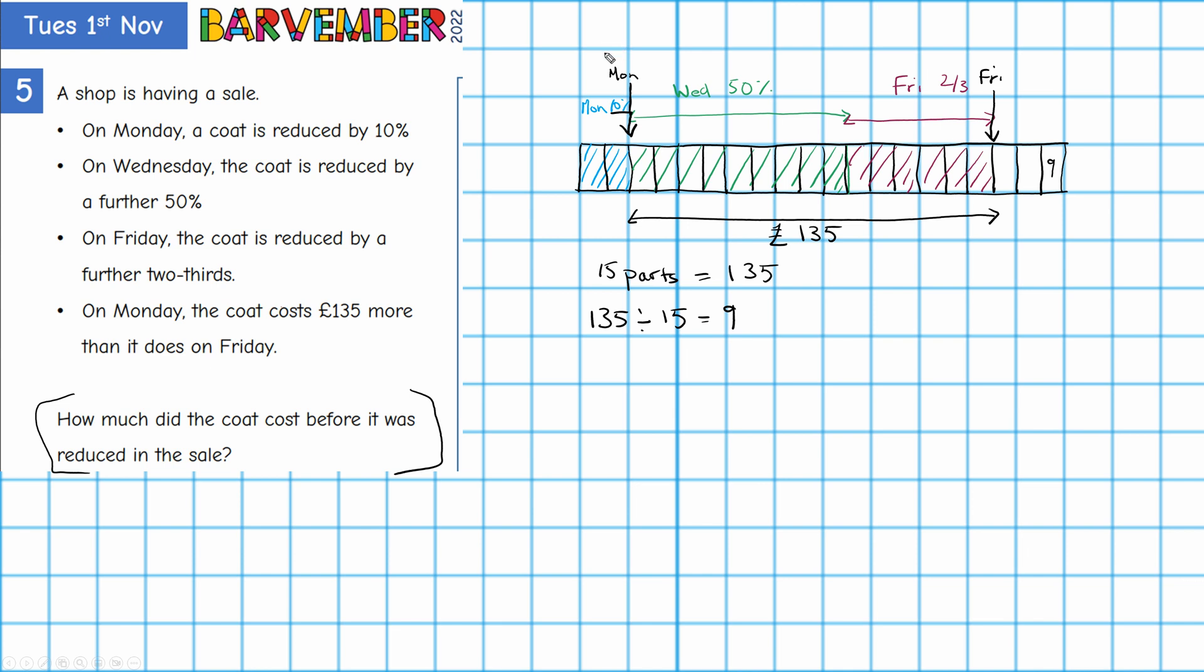It says how much did the coat cost before it was reduced in the sale? Now that is the whole thing. This was the cost of the coat, all right, before we started our mad reductions, okay? So this was the cost of the coat originally. That's what we're asked for before it was reduced.